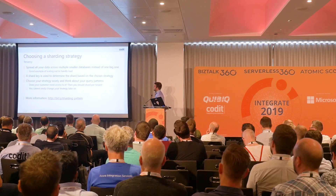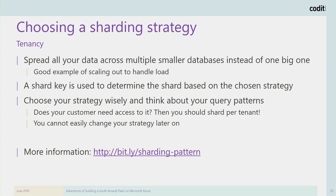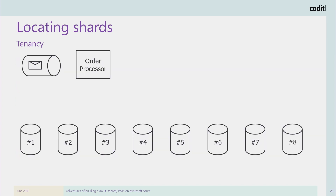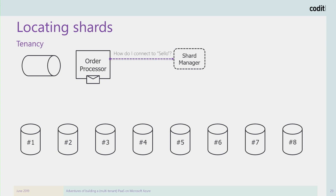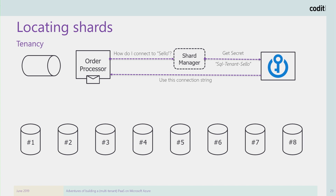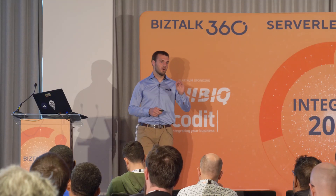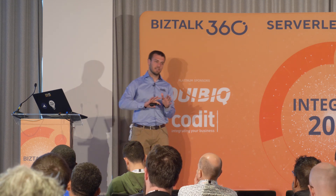Sharding: instead of one database you keep scaling up, you have multiple smaller databases you scale out — much easier from a database scaling perspective. But your application needs to know which shard to connect to. Key Vault can really help here. An order processor gets a message for a specific tenant, asks the shard manager how to connect to that customer, the shard manager connects to Key Vault, retrieves the secret for that tenant, and gets the connection string back. The application doesn't need to be aware of tenants, the secrets are securely stored in Key Vault, and it delegates that lookup.